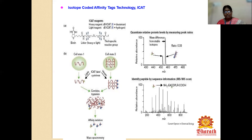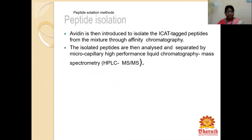Peptide isolation methods mainly use avidin. Avidin is a peptide molecule introduced to isolate ICAT-tagged peptides from the mixture through affinity chromatography. The isolated peptides are then analyzed and separated by microcapillary high-performance liquid chromatography and mass spectrometry.